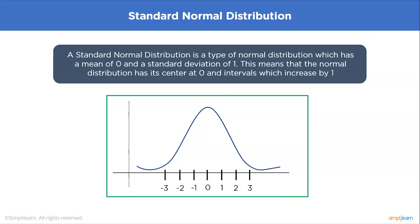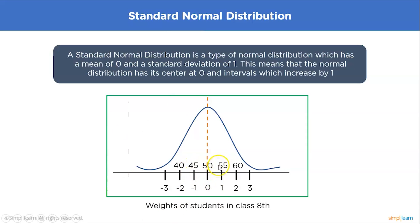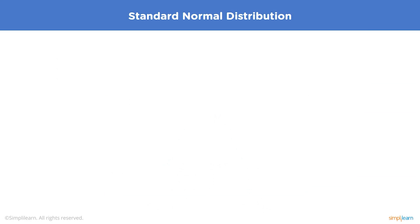Consider the weights of students in class 8. The average weight is around 50 kg, with data increasing and decreasing in steps of 5. When standardized, the data is evenly distributed in steps of one — this is what a standard normal distribution looks like. Any data that follows this pattern can be standardized and converted into a standard normal distribution, which makes calculations comparatively easy.